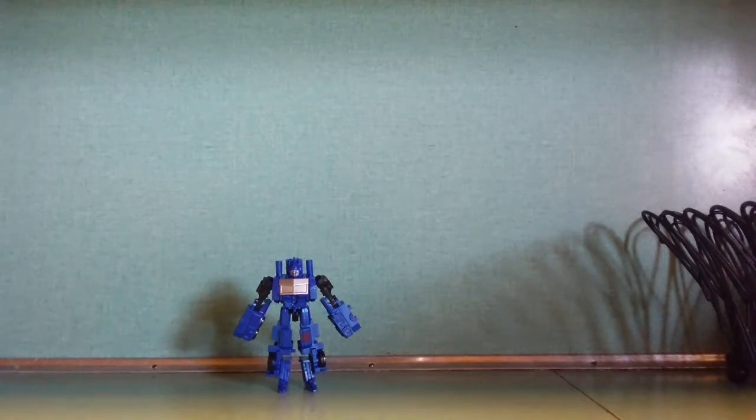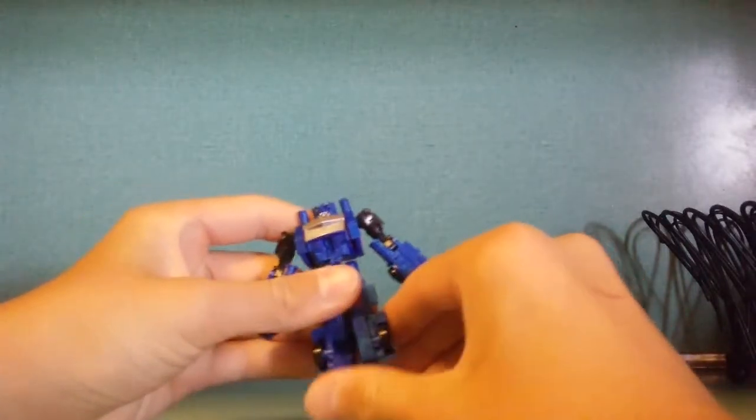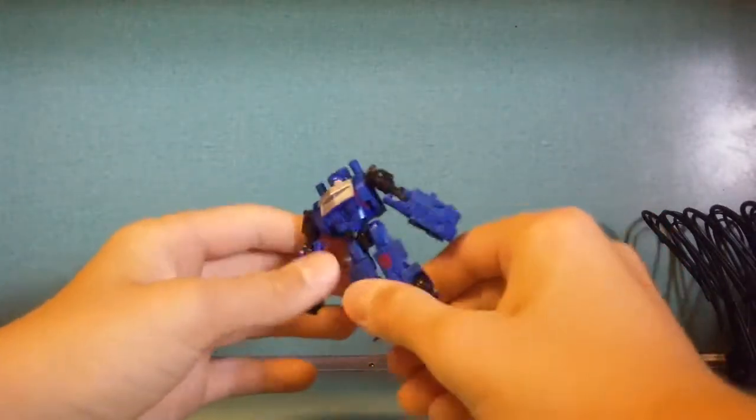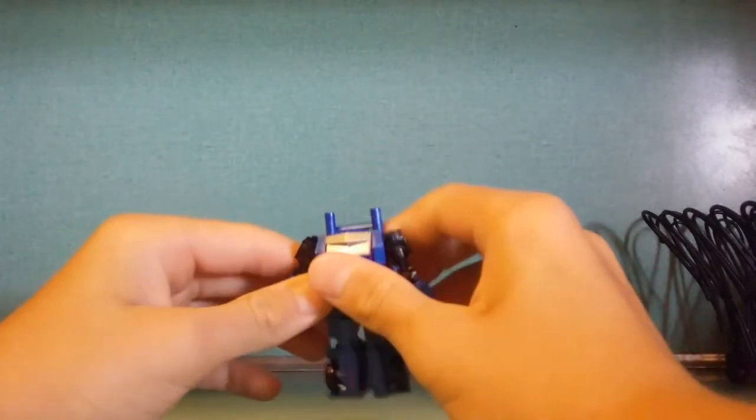To transform back into vehicle mode, what you're gonna wanna do is come to the feet, and just fold his feet up into his shin, just like so. Then you're gonna wanna go ahead and fold his head down, just like so. That'll snap into place.